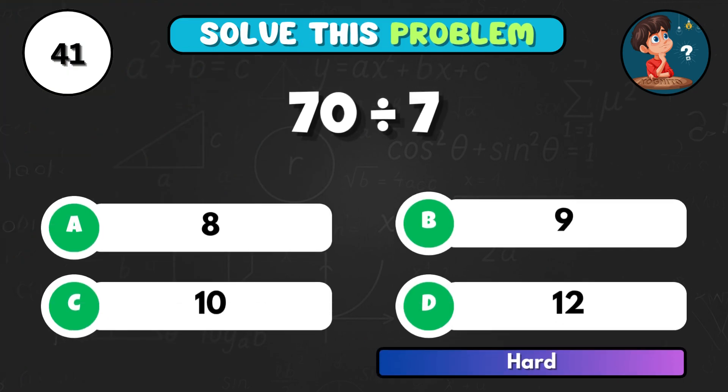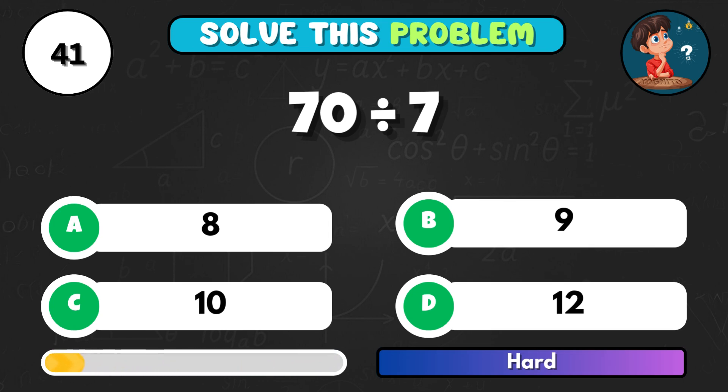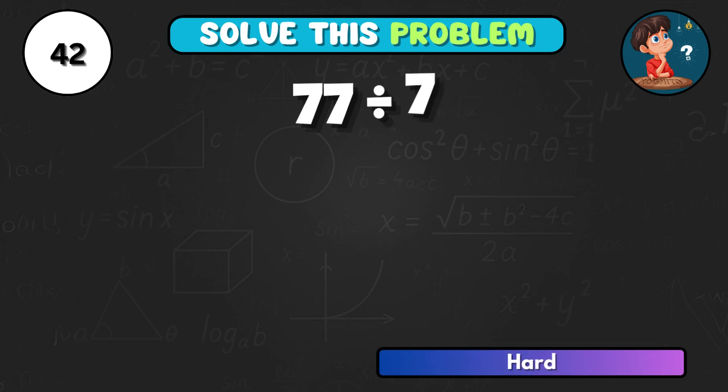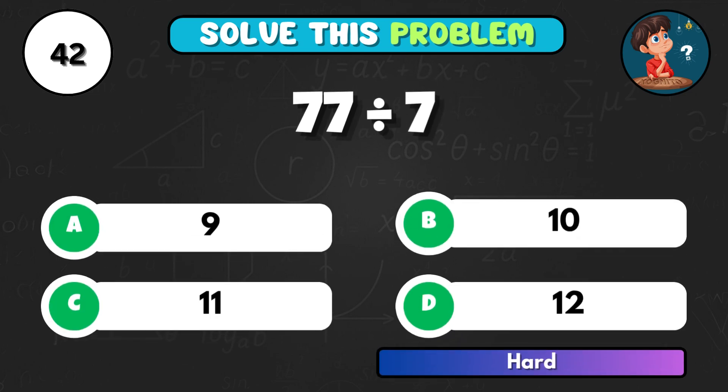70 divided by 7, what's your answer? That's C giving 10. 77 divided by 7, what do you get? Option C equals 11.